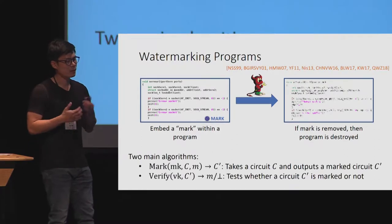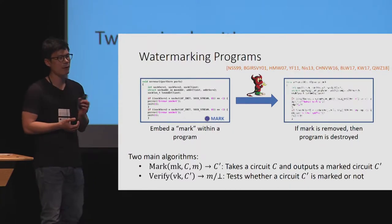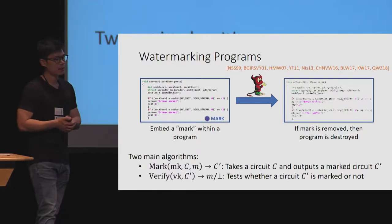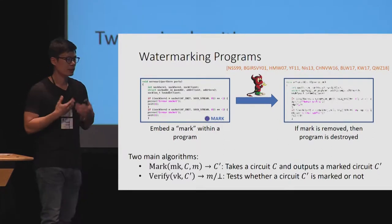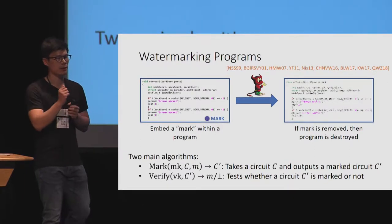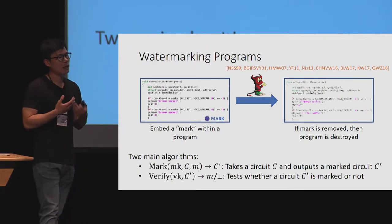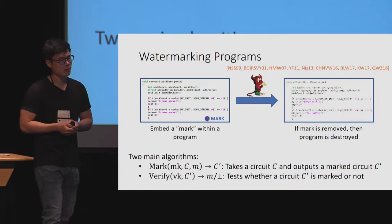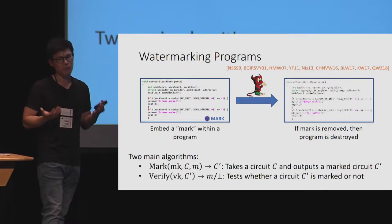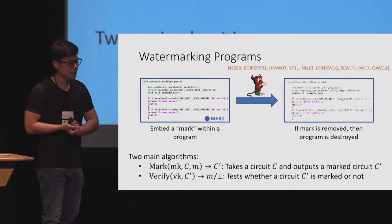More formally, we define a watermarking scheme with respect to two algorithms: mark and verify. The marking algorithm takes in a marking key, a circuit, and some message, and outputs a circuit C prime that has the message embedded inside it. The verification algorithm takes in a verification key and some circuit C prime, and basically extracts the message embedded inside the circuit, or outputs bot. This is the syntax of a traditional message-embedding watermarking scheme.